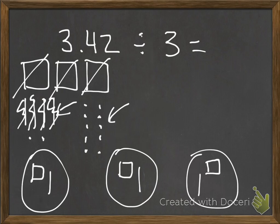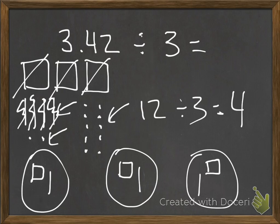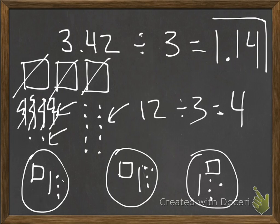Now I have ten hundredths pieces plus the original two hundredths from the problem, giving me a total of twelve hundredths to share into three groups. Twelve divided by three means I put four hundredths pieces into each group. In each group there is one whole, one tenth piece, and four hundredths pieces, giving a total answer of one and fourteen hundredths. And that's how you use base ten blocks to model division with a decimal divided by a whole number.